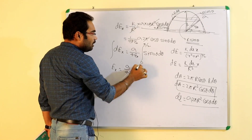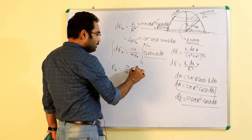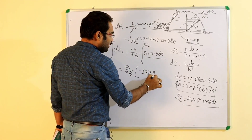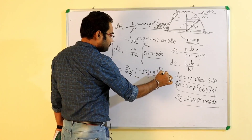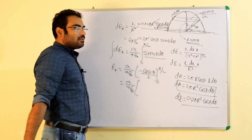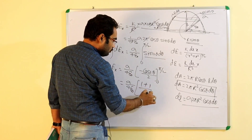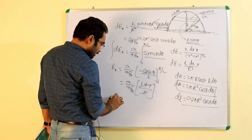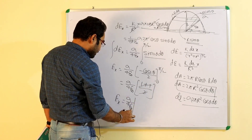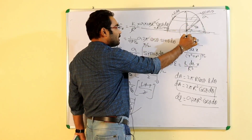To yahan se E ka value calculate ho jayega: sigma by 4ε₀ into [sin 2θ ka integration = −cos 2θ / 2] from 0 to π/2. Sigma by 4ε₀ into: [−cos π − (−cos 0)] / 2 = [1 + 1] / 2 = 1. To electric field jo aa gaya voh sigma by 4ε₀ ke barabar aa gaya.